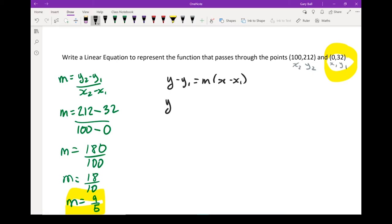y minus y1 in this case is going to be 32 equals and my slope is 9 over 5 times x and x1 happens to be 0. Leave it like that. You're completely right. I prefer to take that minus 0 out. It just clutters things up a bit.